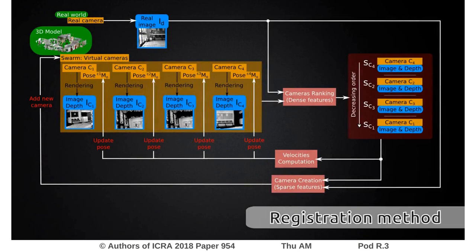The core of the process consists of two main stages: the displacement of the swarm, which is based on a dense visual feature, and the creation of new particles, which is based on geometrical sparse visual features. This framework has been conceived to fully take advantage of both geometrical and dense visual features to perform an accurate final 2D-3D alignment.